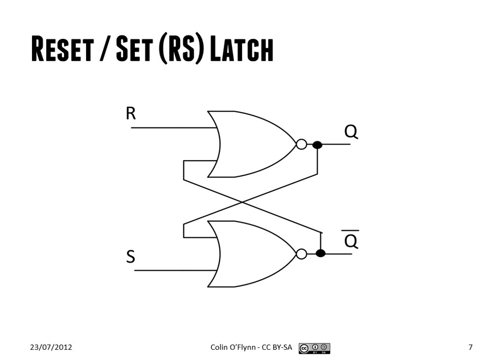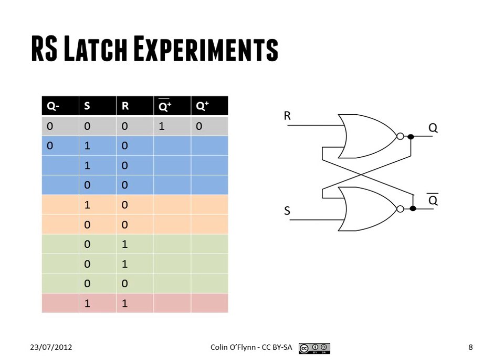So a more useful version and sort of the most basic element you'll find is what we call the reset-set or RS latch. So the RS latch is built from two NOR gates here. You can also build it from two NAND gates in a similar manner. And how it works is that when you put a certain input in it, it will stay in whatever state you set it to.